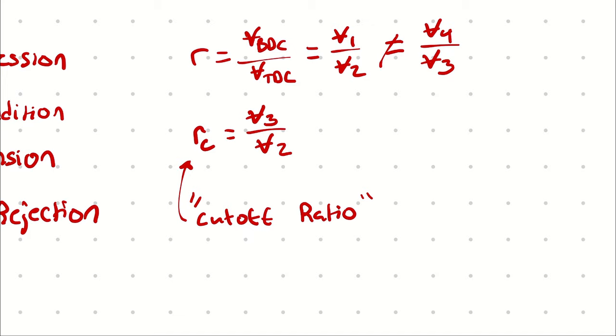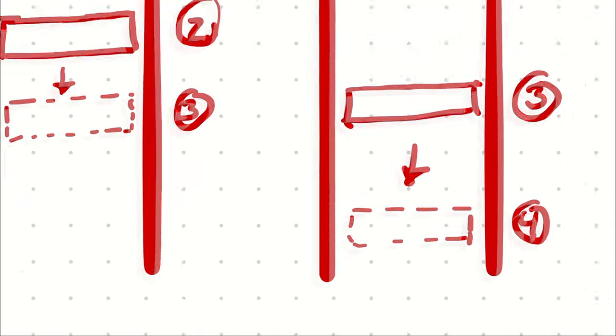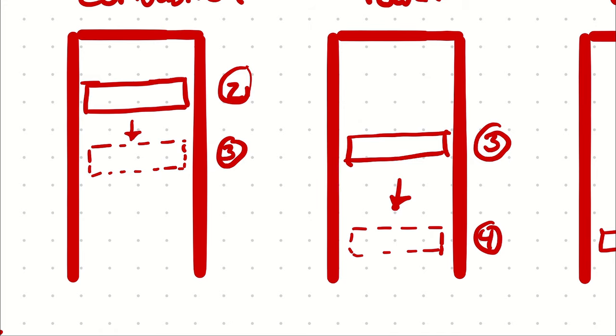A high compression ratio does not necessarily mean a high cutoff ratio. We want a very small cutoff ratio because we want the fuel to burn as early as possible so that we can get as much power in the power stroke as we can.